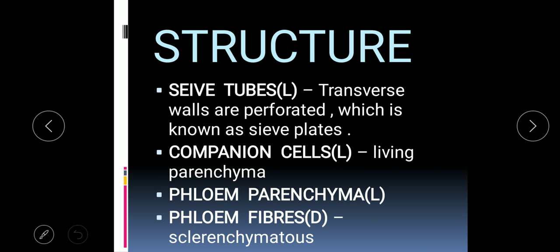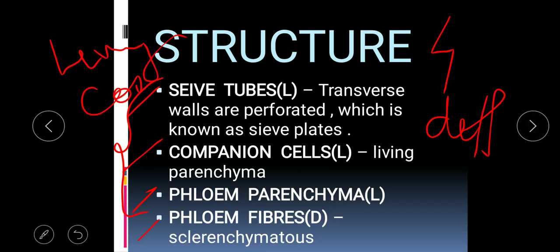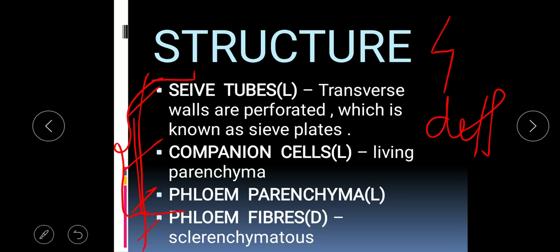Phloem is composed of four structurally and functionally different types of cells: sieve tubes, companion cells, phloem parenchyma, and phloem fibers. Out of these, three are living cells and the only dead cell is the phloem fiber. That is why phloem is the living complex permanent tissue, whereas xylem was the dead complex permanent tissue.